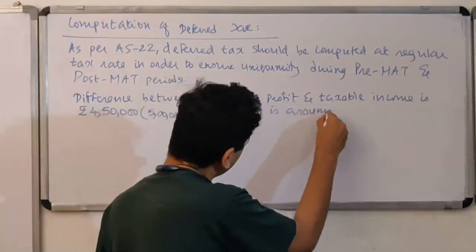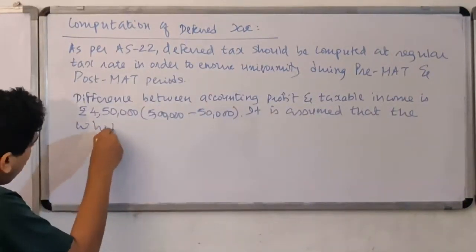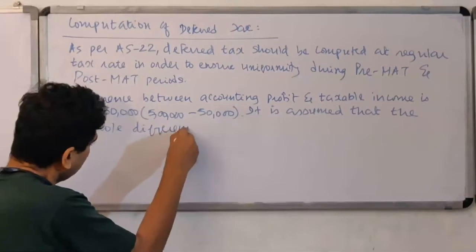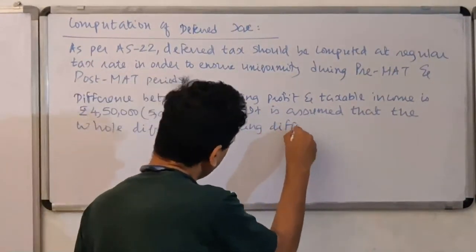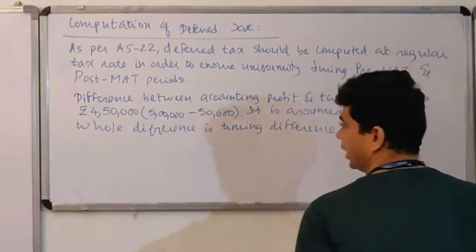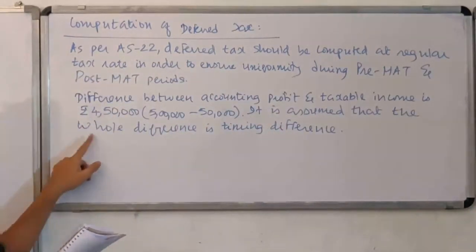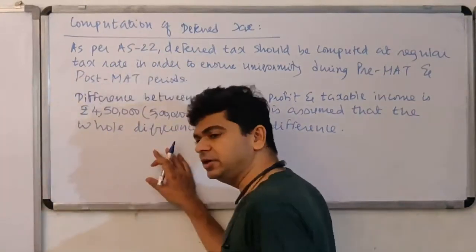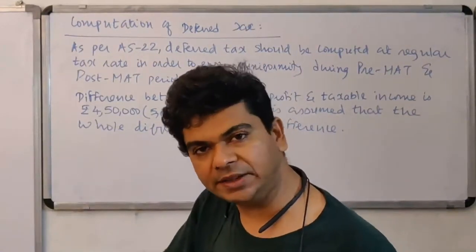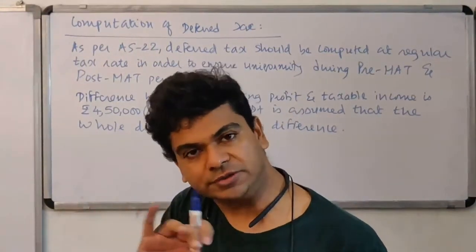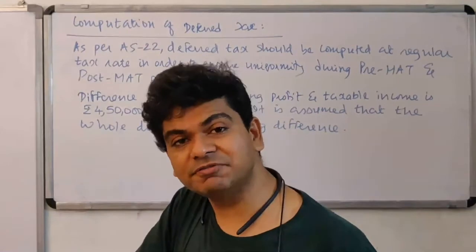It is assumed that the whole difference is timing difference. That's an assumption that we are making. By chance if the question says that 20,000 rupees is permanent difference, so total difference is 4 lakh 50, 20,000 is permanent, then my timing difference will be only 4 lakh 30. If your timing difference is only 4 lakh 30, then recognize deferred taxes only on 4 lakh 30. No such thing is there in this question. So we are assuming entire difference is timing difference. On this timing difference, I will recognize deferred tax. And the tax rate, we have already made it clear, it has to happen at the regular tax rate, which in our case is 30%.